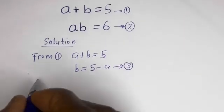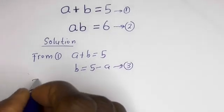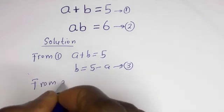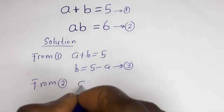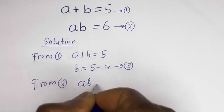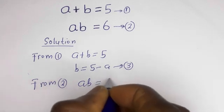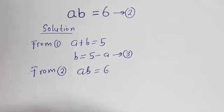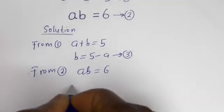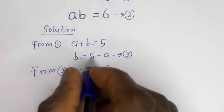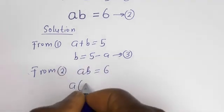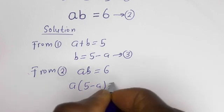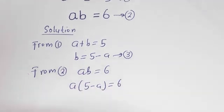Also from equation 2, a times b is equal to 6. Substituting equation 3, we have a times (5 minus a) is equal to 6.